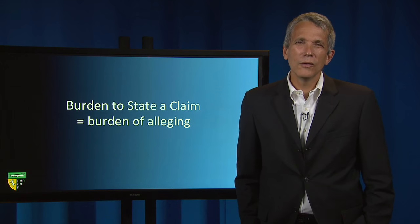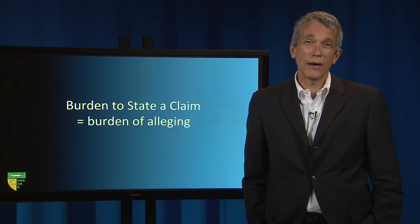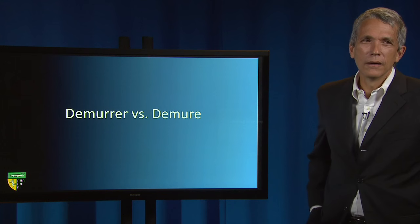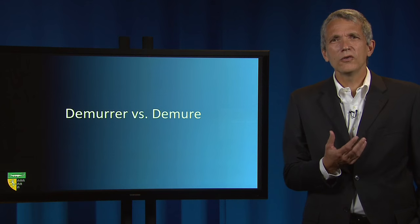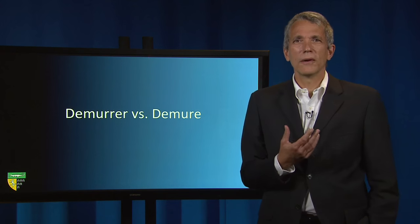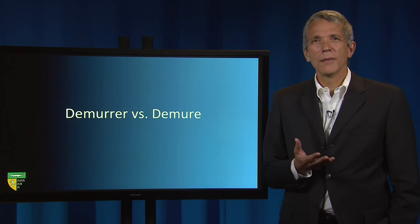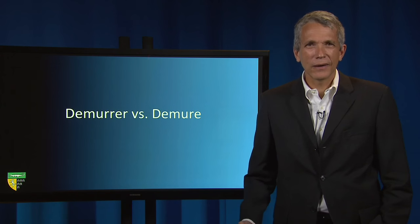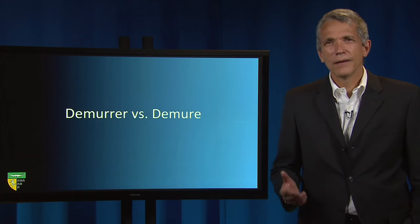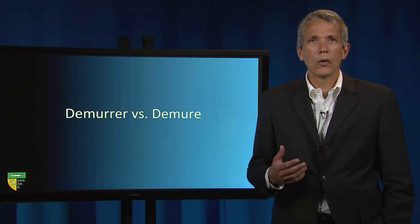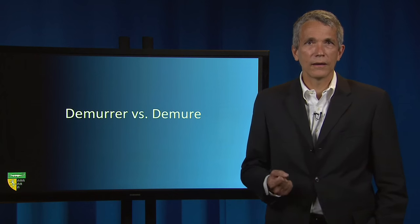Let's now use a stylized civil suit to think about how these burdens of production and persuasion play out. Even before discovery or introduction of evidence, the moving party usually has what might be called the burden of allegation. For example, if a civil cause of action has four elements, and the plaintiff's complaint fails to make an allegation that the fourth element is present, the defendant can demur — or in modern parlance, move to have the case dismissed for failure to state a claim.